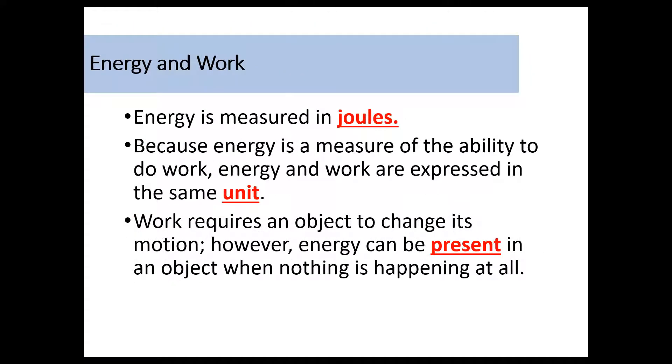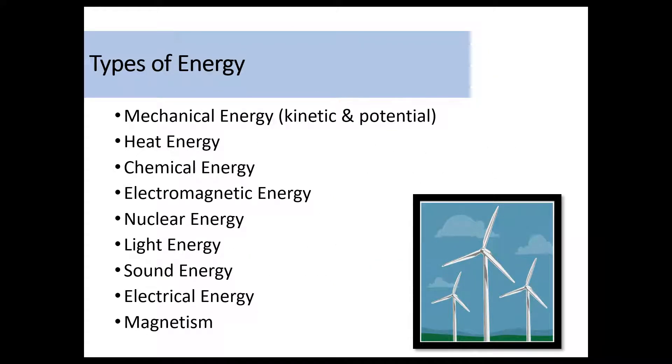So we have a unit for energy. Energy is measured in joules. And because energy is a measure of the ability to do work, energy and work have the same unit. So you might be thinking, oh, well, work had, when we solve for work problems, the unit was joules. And that's right, because energy is a measure of the ability to do work. So they're going to have the same unit. So work requires an object to change its motion. However, energy can be present in an object, even if that object's not moving, or even if nothing seems to be happening, because we have different forms of energy. So you may have heard of potential energy, and that would be an example of potential energy. So something like a book lying on your desk, it might appear to have no energy present, but it does. We just call it potential energy.